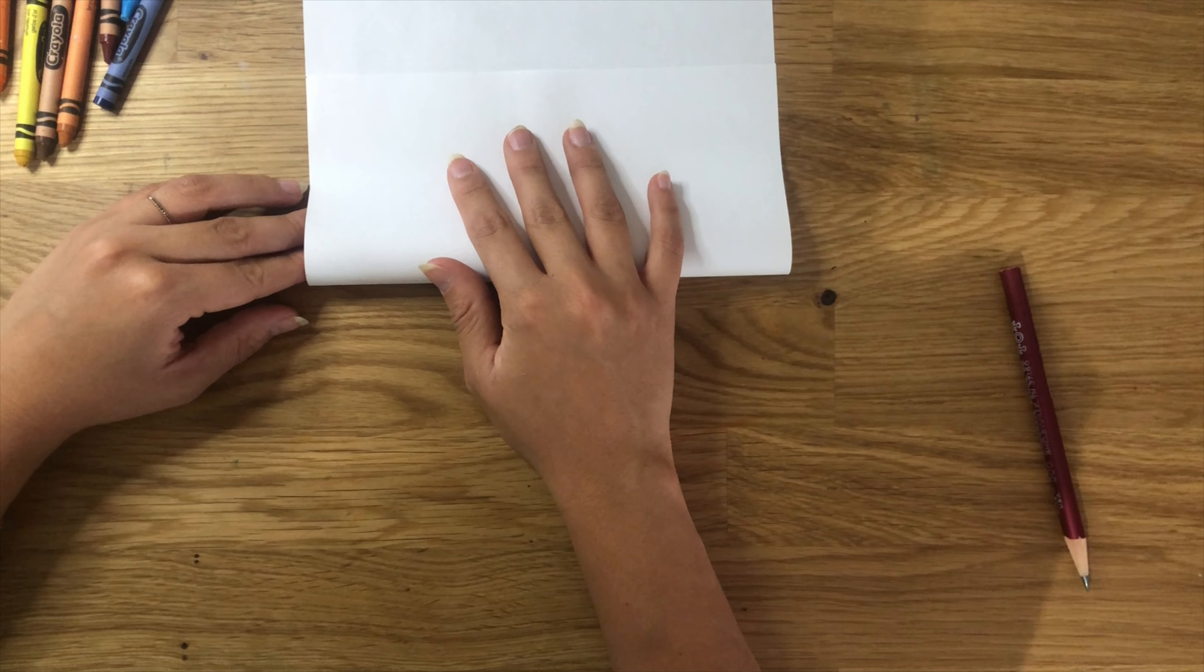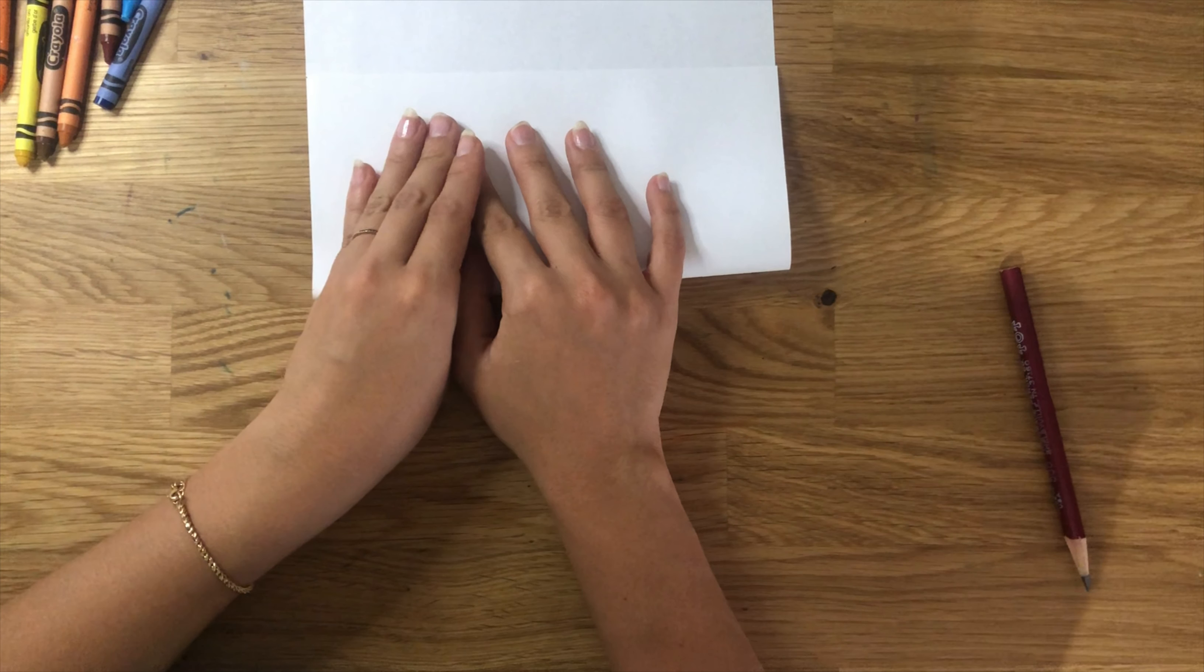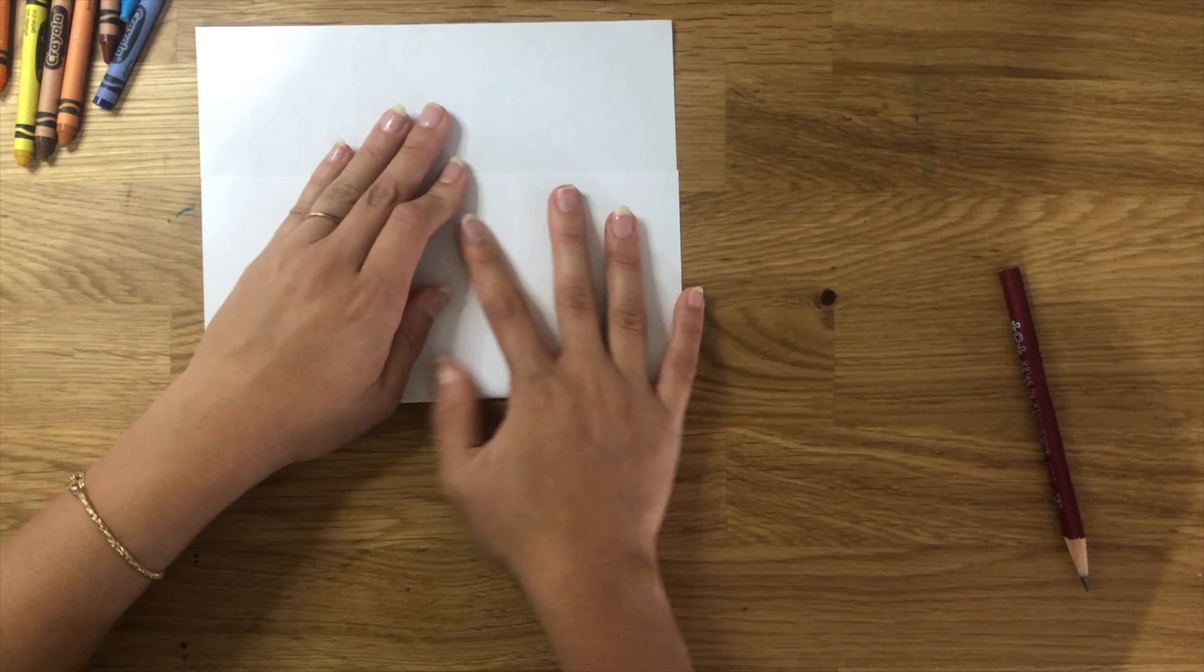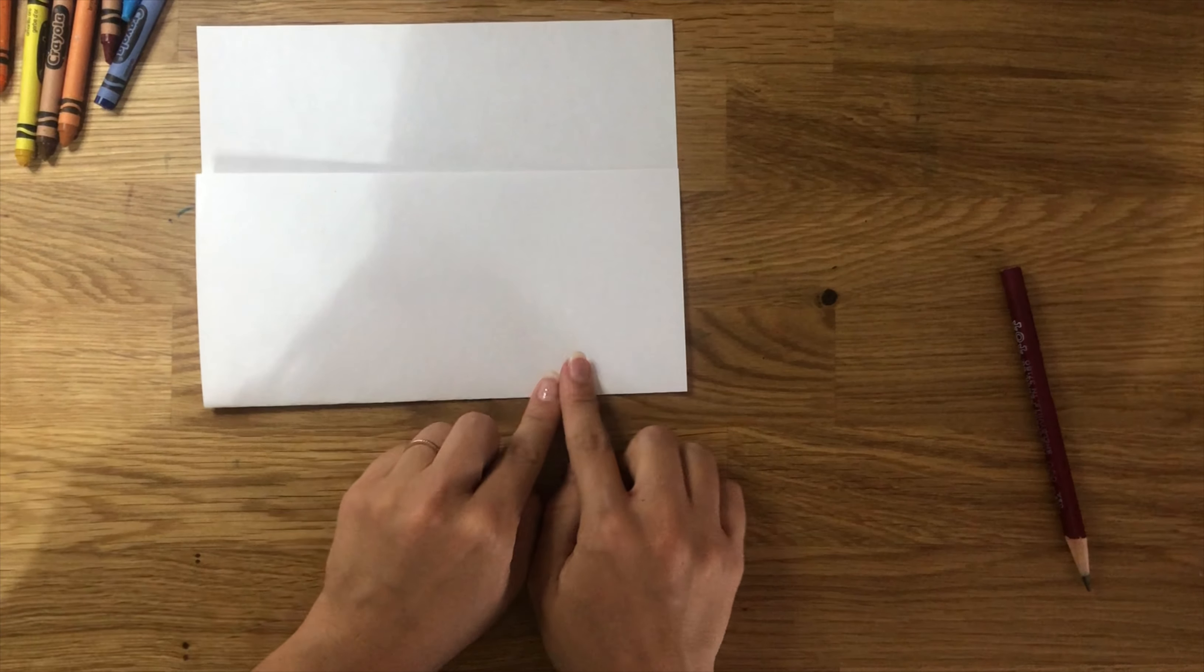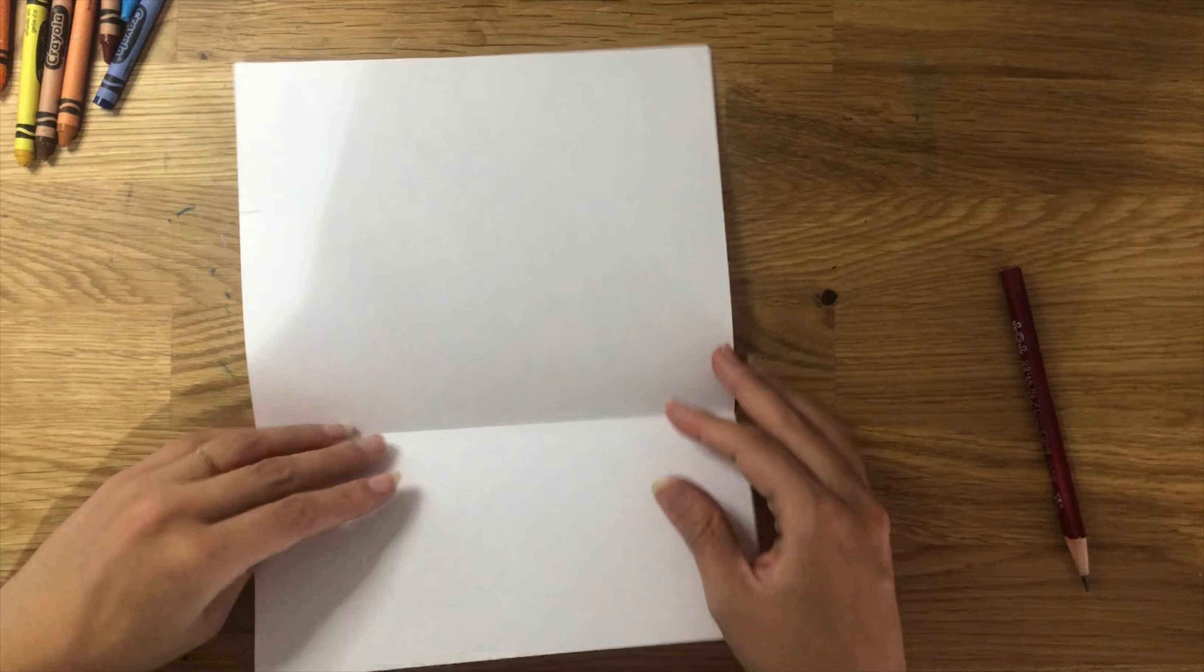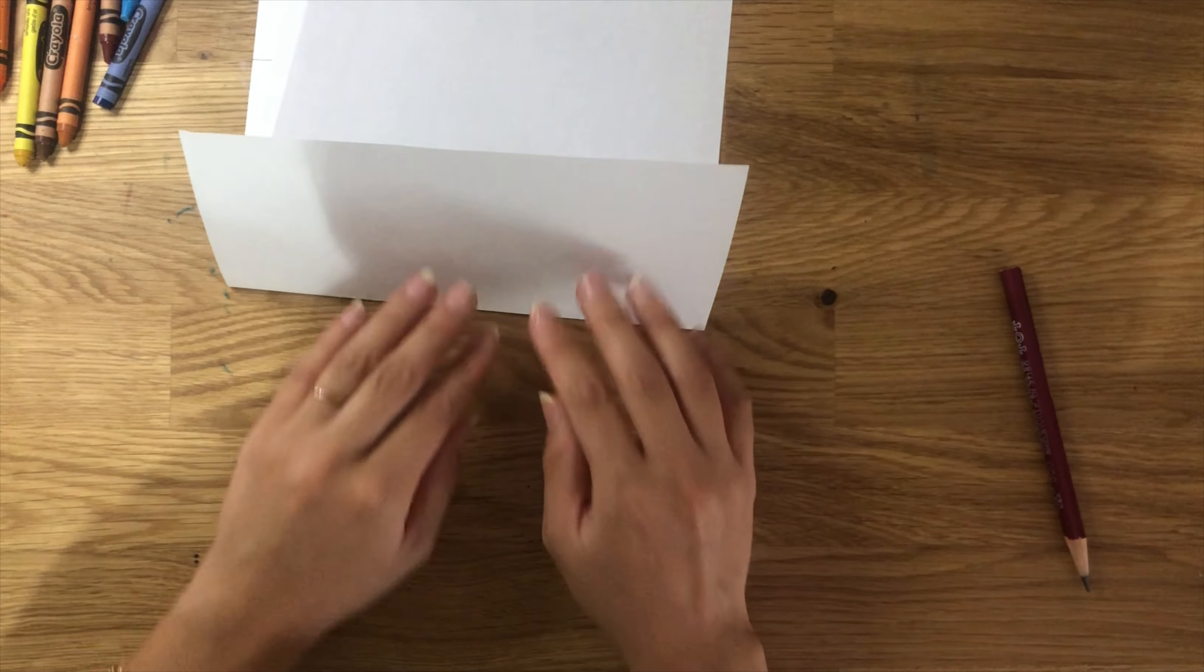Take the bottom corners of the paper and lift up, meeting the mark that you made first. Hold your paper down so it matches both the left and the right side to make sure that your fold is straight. Don't forget to crease down the fold.